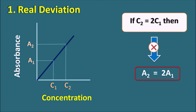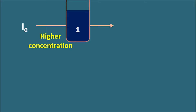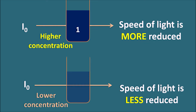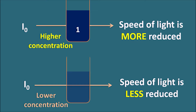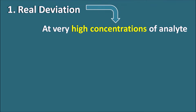Real deviation is mainly observed at high concentrations of the analyte. Suppose we have a sample solution at a high concentration and we send a source of light through this sample. When light passes from air into the sample, the speed of the light is more reduced because the sample is at higher concentration. If we take another sample with lower concentration, the speed of light is less reduced because the sample is diluted. So the velocity of light is not the same in the two samples — it is more reduced in the higher concentration sample. One parameter, the refractive index, is coming into play. The real deviation is observed at very high concentrations where the refractive index interferes with our study.